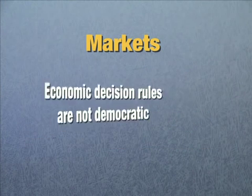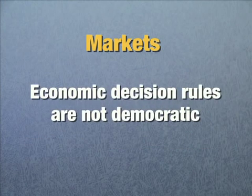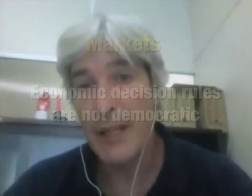The third issue is that economic decision rules are not democratic. Deciding how much natural resources to use based on markets is one dollar, one vote — whoever has the money gets the say. And yet a lot of these natural resources are a shared inheritance of mankind. We might prefer more democratic decisions for figuring out who gets to use them.